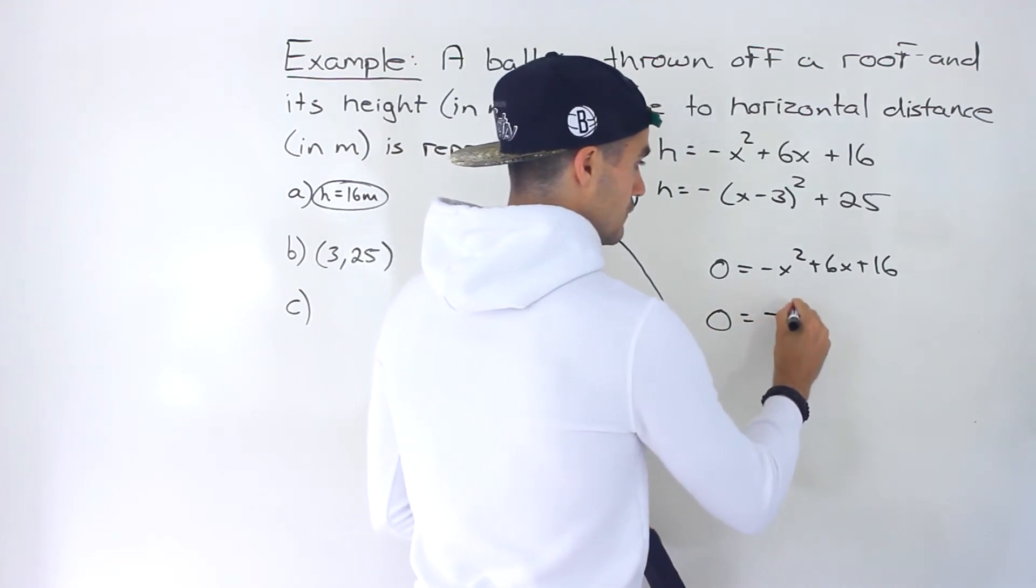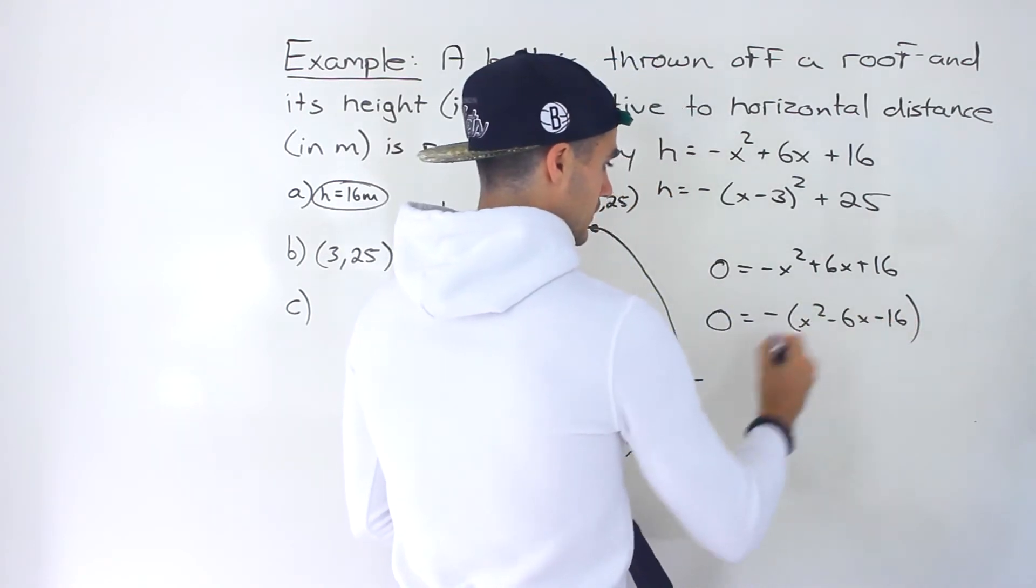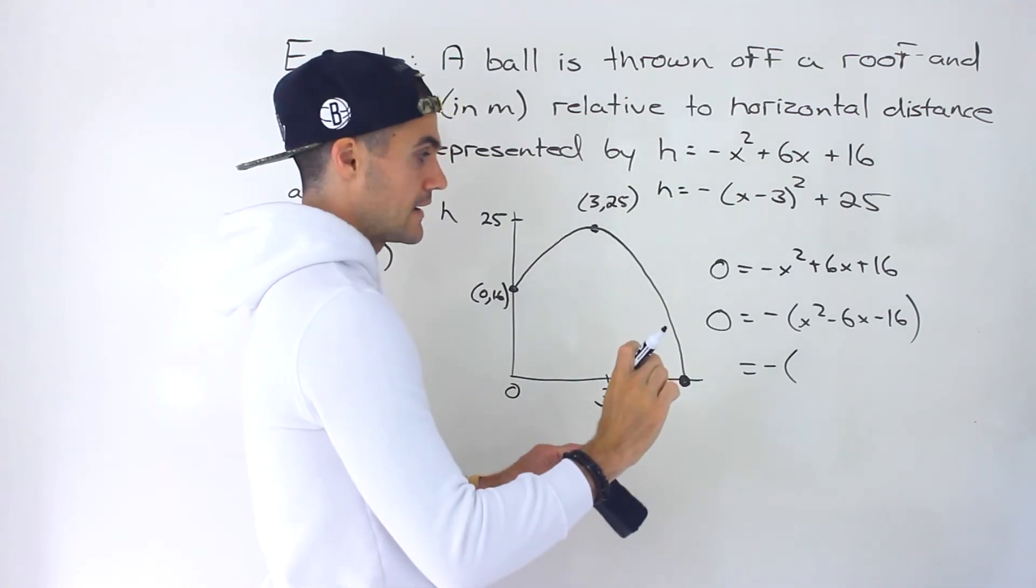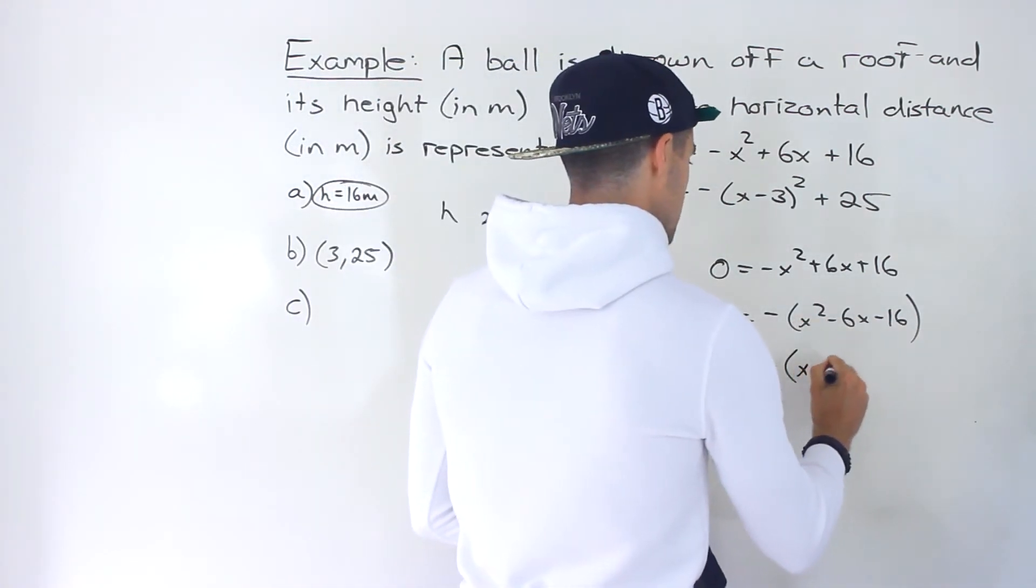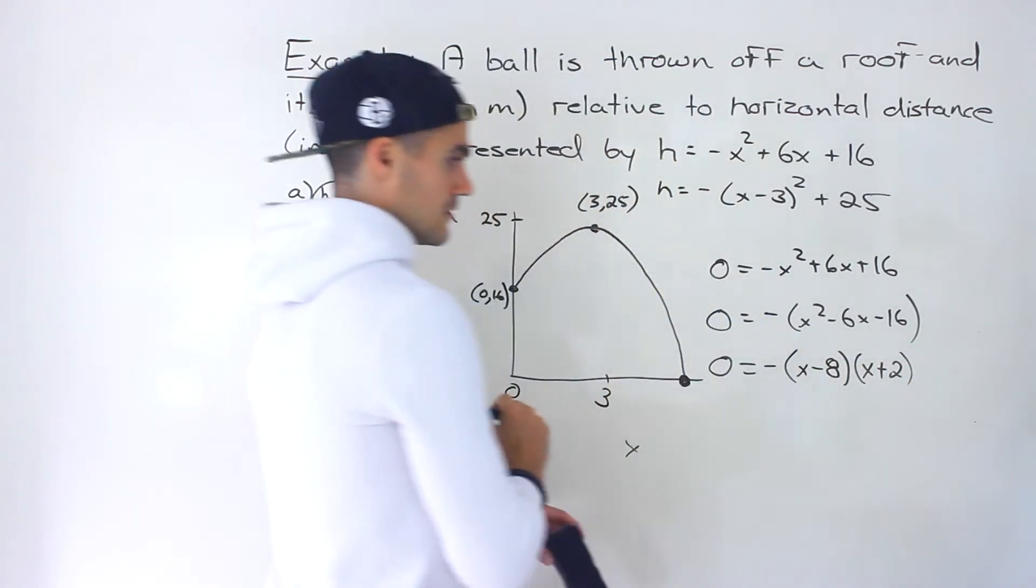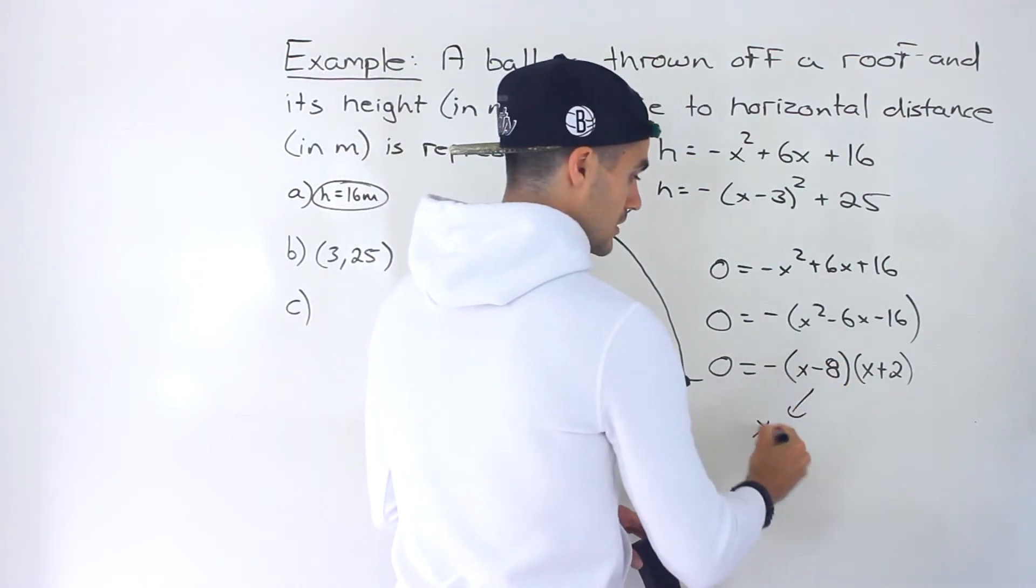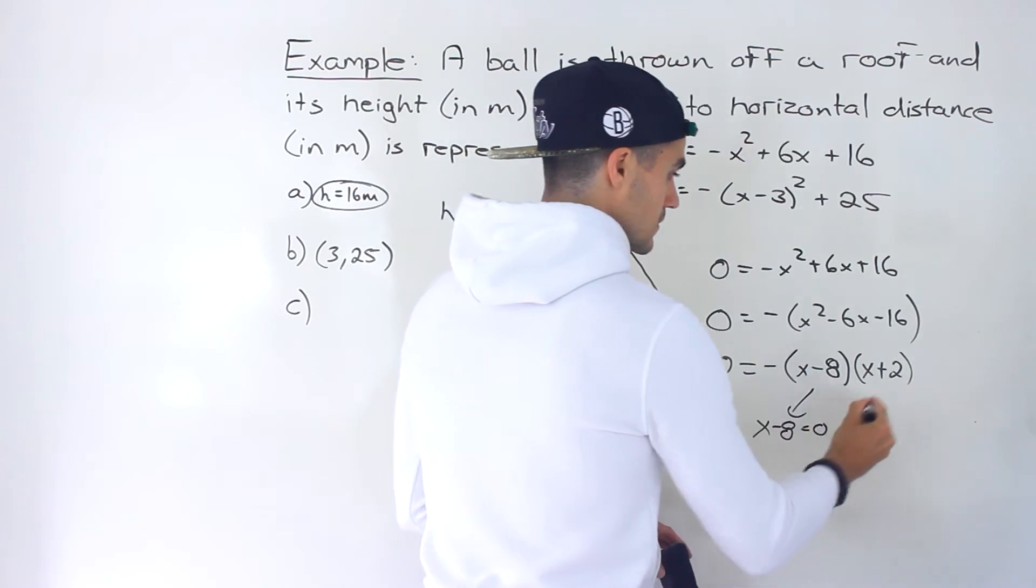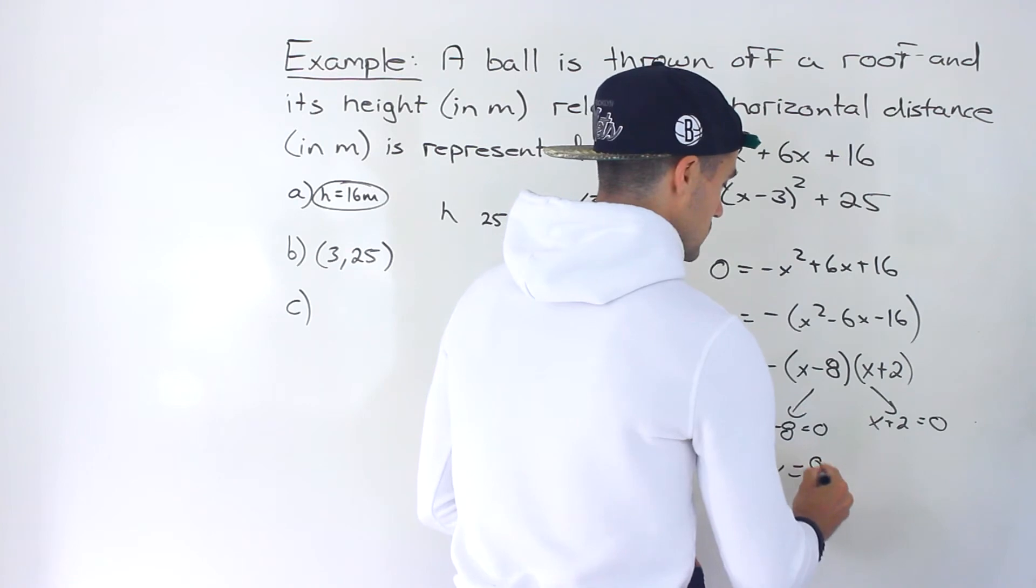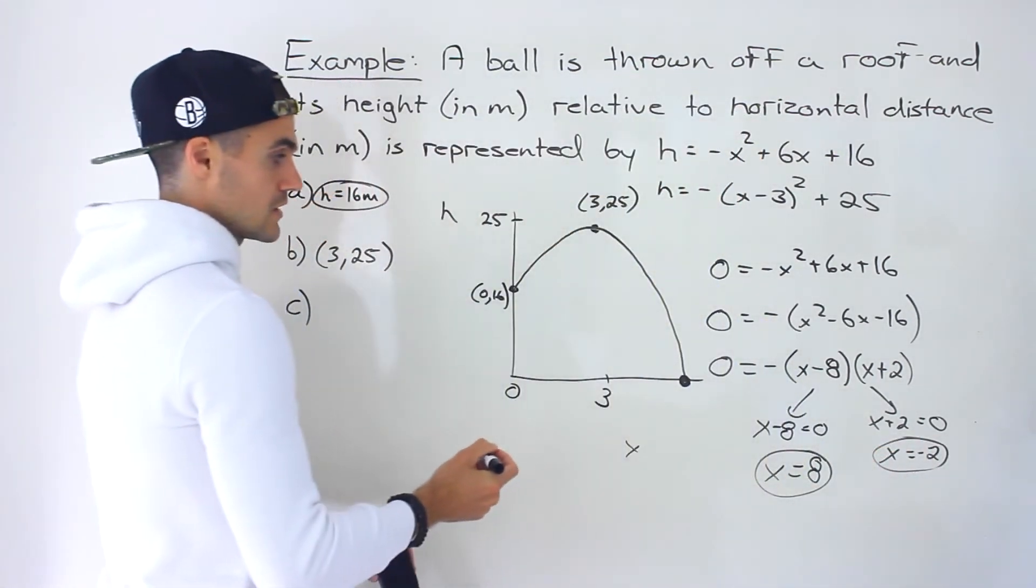So if we take out a negative from everything, and then this bracket here, I'm not going to go through the whole decomposition process. You should be fairly comfortable with that by now, but this bracket here, it does factor into (x - 8)(x + 2), like that. And so this is still zero. And so from here, when is this right side going to equal zero? Well, either when x - 8 is equal to zero, or when x + 2 is going to equal zero. So this is going to happen at an x value of 8. This is going to happen at an x value -2. So those are the intercepts right there of the quadratic.